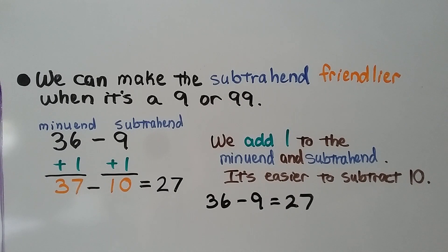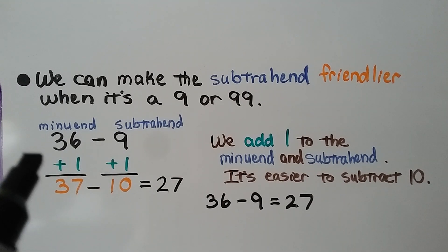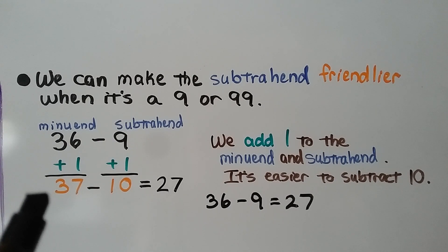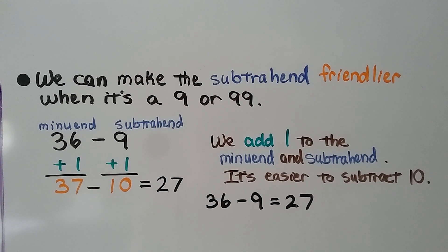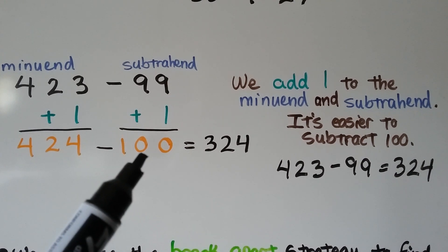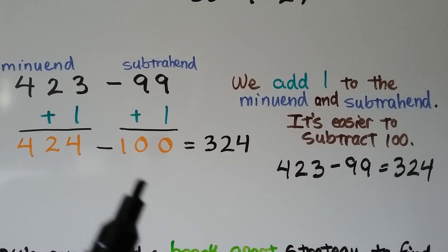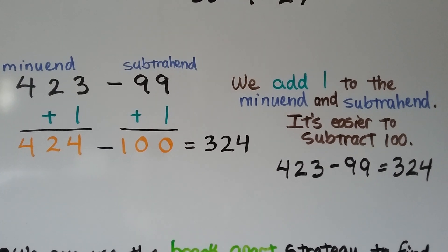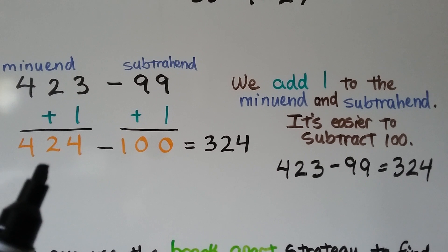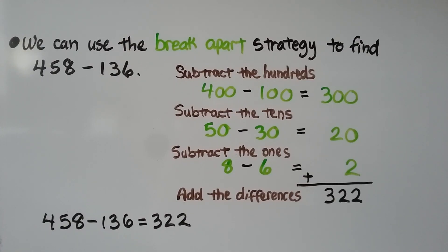We can make a subtrahend friendlier when it ends in 9 or 99. If we add 1 to a subtrahend of 9, it becomes 10, and we add 1 to the minuend as well — so 36 minus 9 becomes 37 minus 10, which equals 27. Similarly, if the subtrahend is 99, add 1 to make it 100, and add 1 to the minuend: 423 minus 99 becomes 424 minus 100, which equals 324.